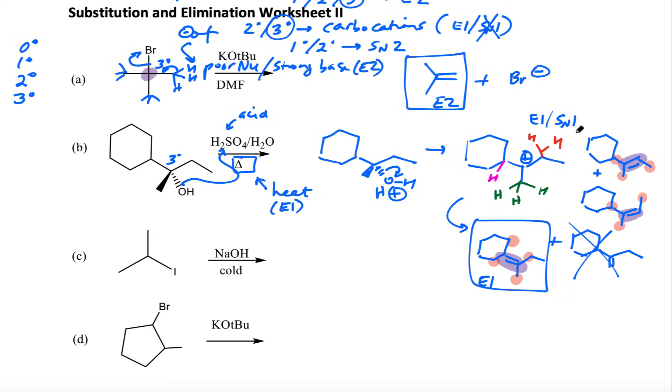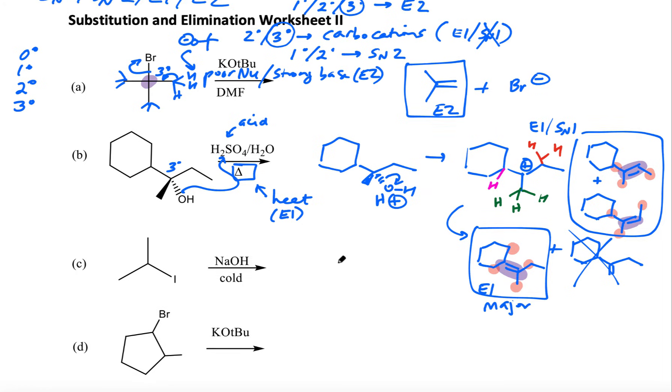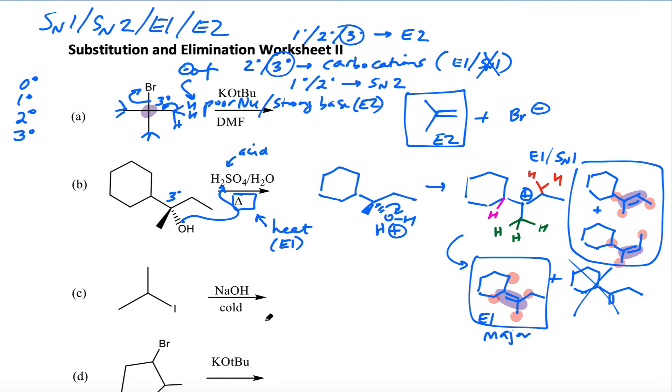Therefore, this will be my major product, E1. And then if you had to state minor products, you could say these would be your minor products. All right. So again, if you see a strong base, that usually favors E2. If it's a good nucleophile, it also favors SN2. If we have an acid, probably you're starting with an alcohol. We'll do an E1 reaction.